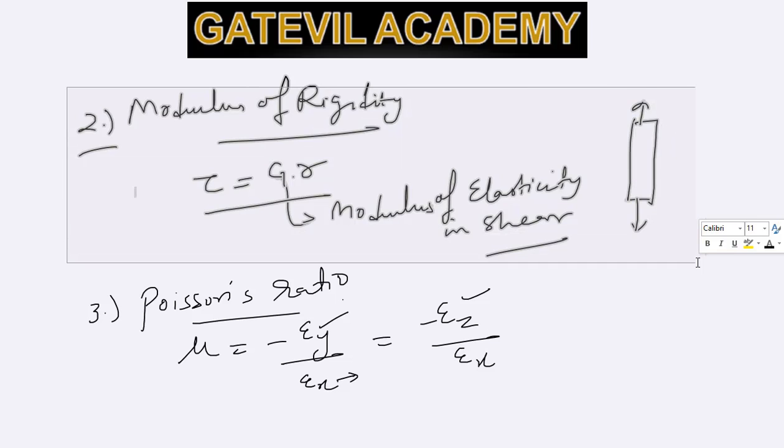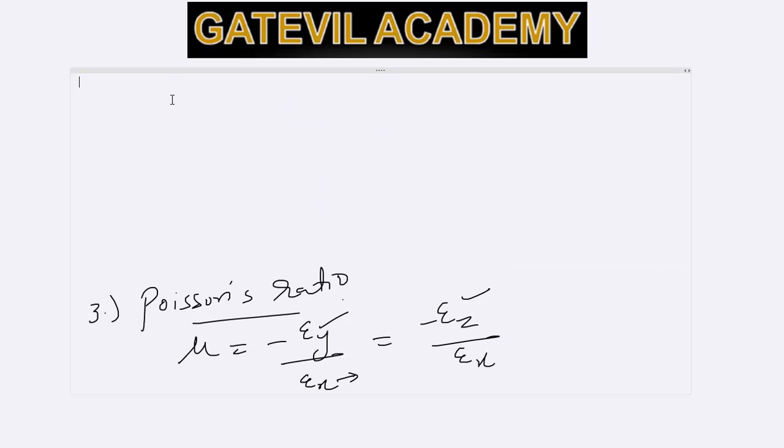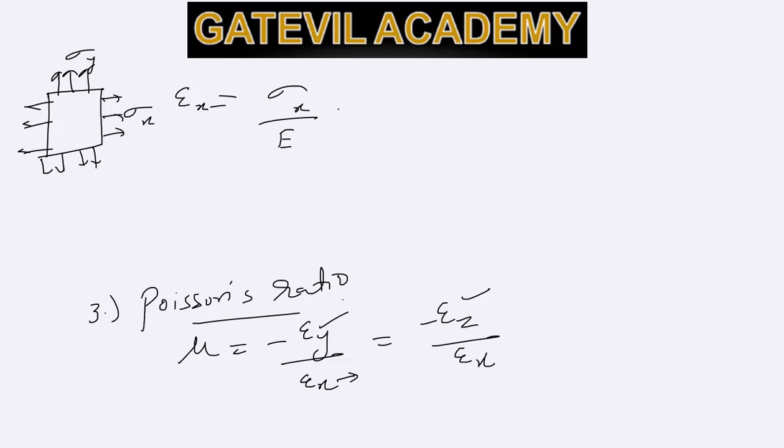So how Poisson's ratio helps us to connect Hooke's law of uniaxial stress to the case of biaxial stress. If we want to write the strain in x direction in a plate when there are two stresses, sigma x and sigma y, we can write epsilon x as sigma x by e minus mu times sigma y by e.